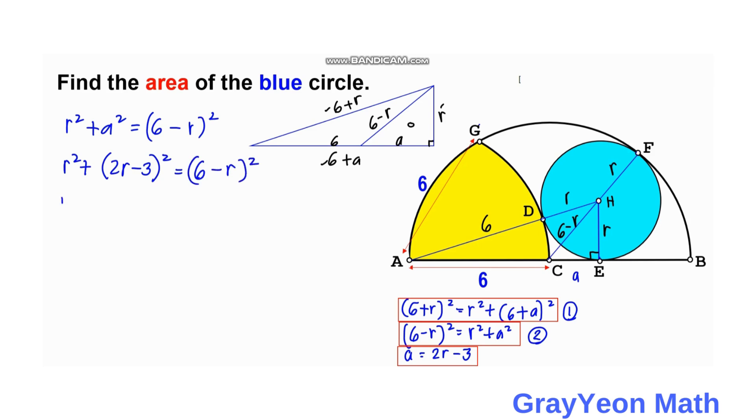So simplifying, this becomes plus 4R squared, then 2 times 3 is 6 times 2, minus 12R plus 9, is equal to 36 minus 12R plus R squared.